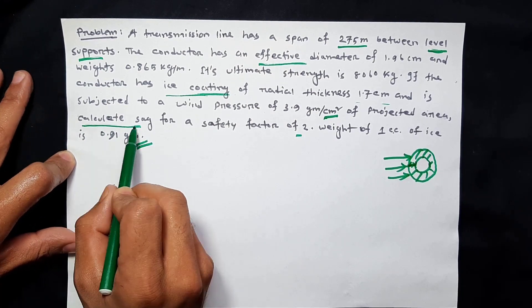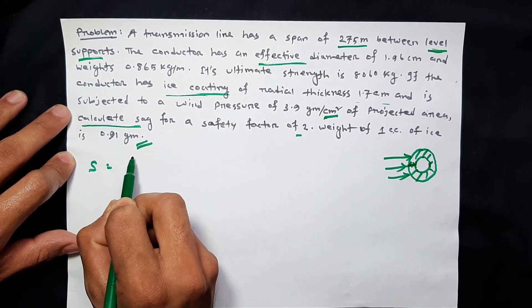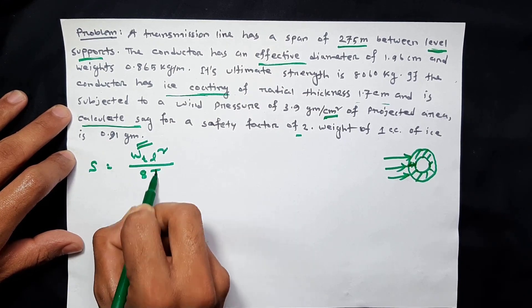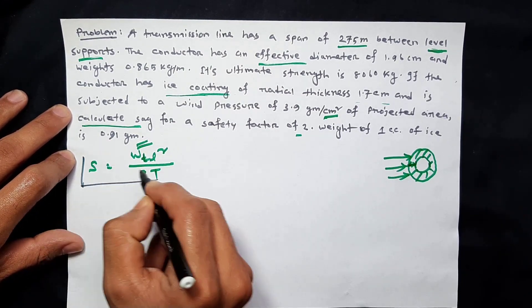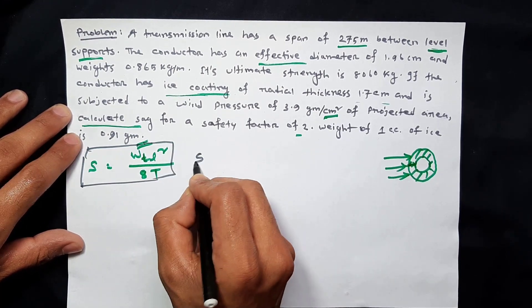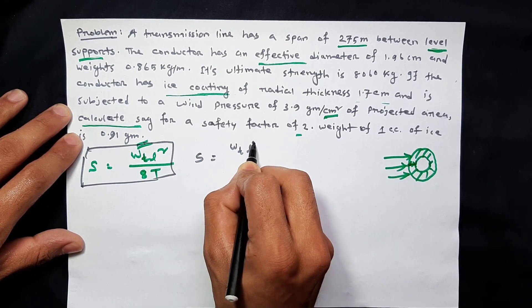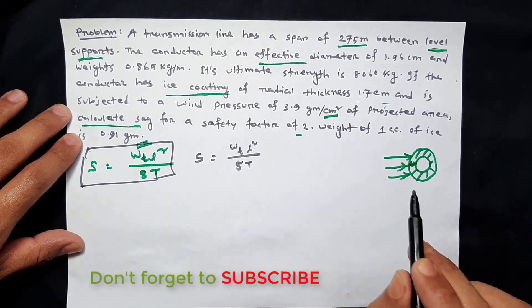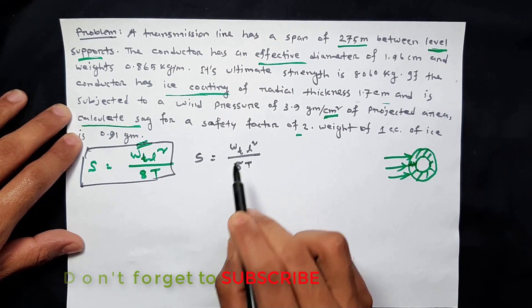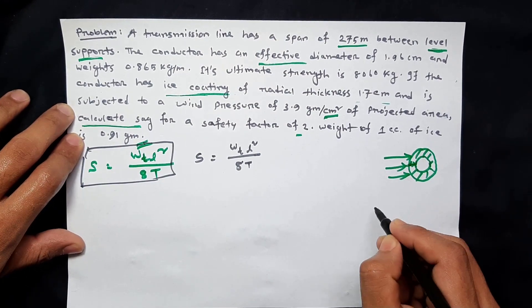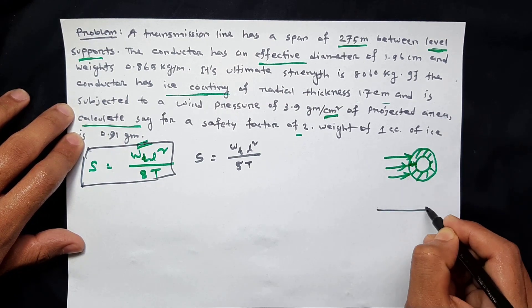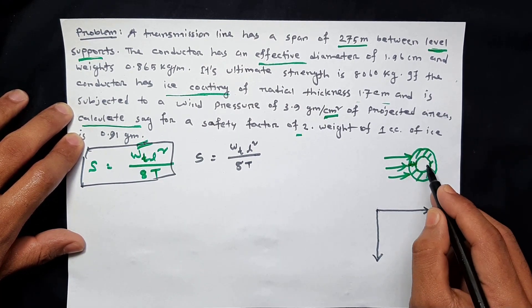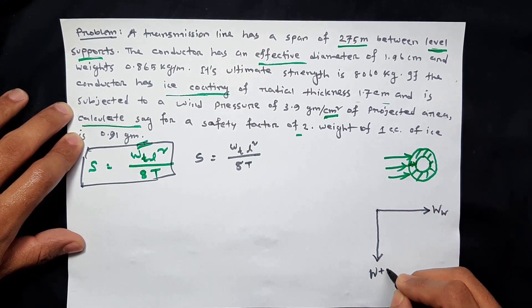Sag S is equal to Wt·L² divided by 8T. That means S equals Wt·L² divided by 8T. Here Wt is the total weight, which is the resultant of the conductor weight combined with wind and ice loading. That means resultant Wt.